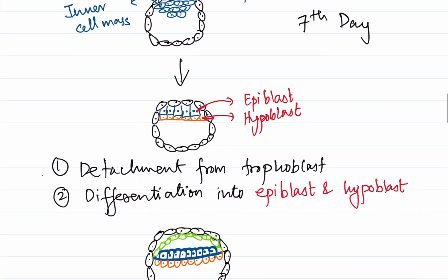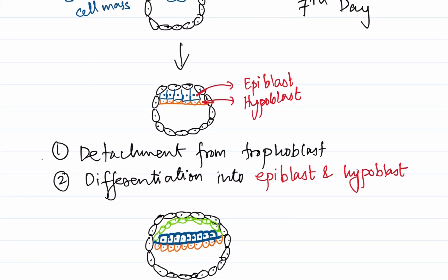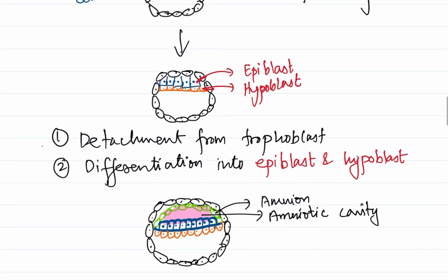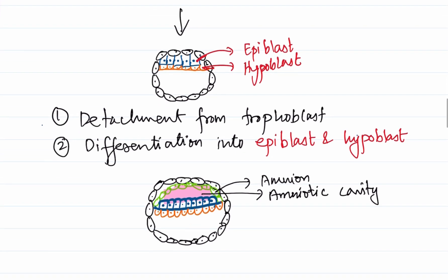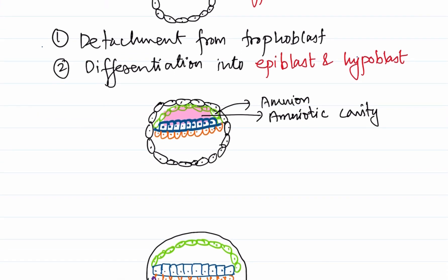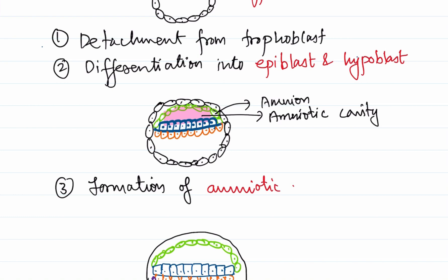The amnion is formed from the cytotrophoblastic cells, which give rise to an amnion above the epiblast. These amniogenic cells engulf a cavity between them, and this cavity is called the amniotic cavity. So the third important event is the formation of the amniotic cavity.